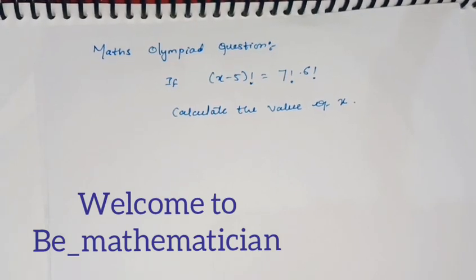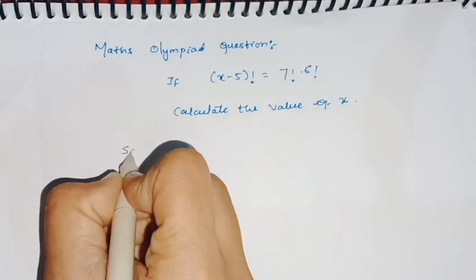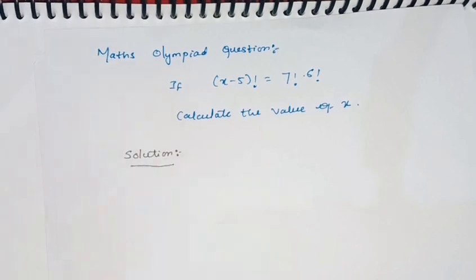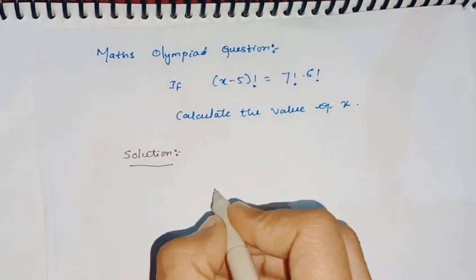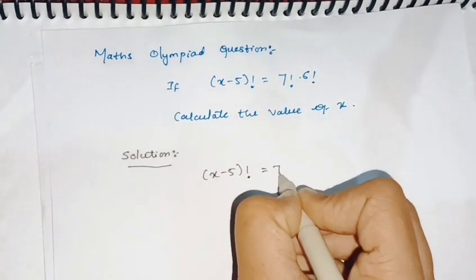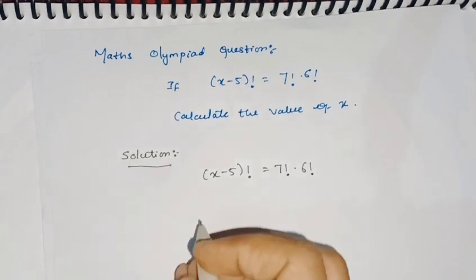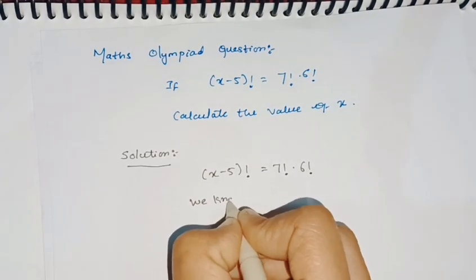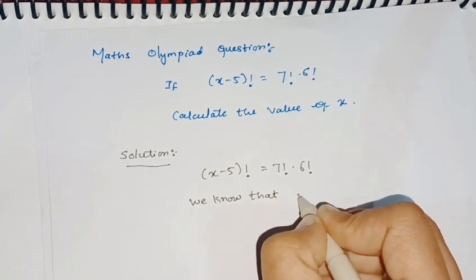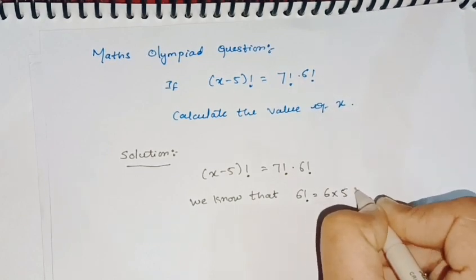Hello friends, we have a nice maths olympiad question: if (x-5)! equals 7! times 6!, we have to calculate the value of x. Coming to the solution, we write (x-5)! = 7! × 6!. On one side we have only one term, (x-5)!, and on the other side we have two terms, 7! and 6!. The idea is to make the right-hand side also a single factorial term.